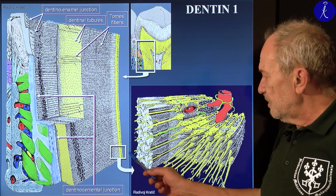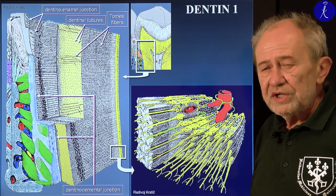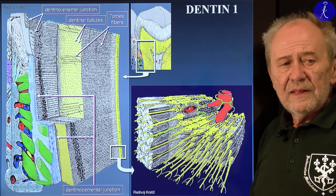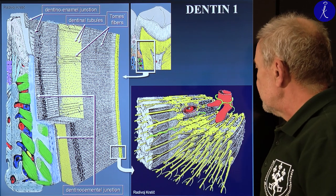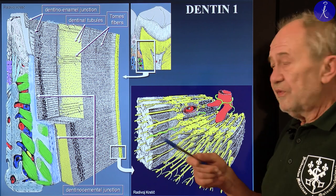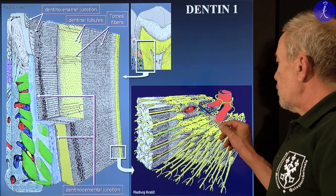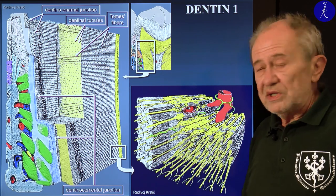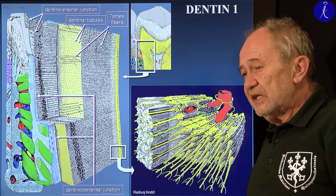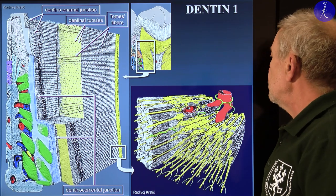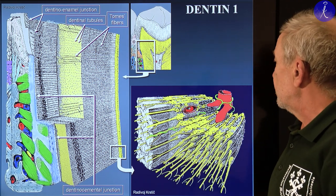The odontoblast layer consists of a single layer of epithelioid cells that completely resemble simple columnar epithelium, with nuclei perpendicular to the cell base. However, contrary to epithelium, blood vessels pass between the cells, accompanied by tiny sensory nerve fibers. Therefore the dentine itself is well innervated — anything reaching the dentine can cause toothache. But the enamel is not innervated at all, so it is senseless.